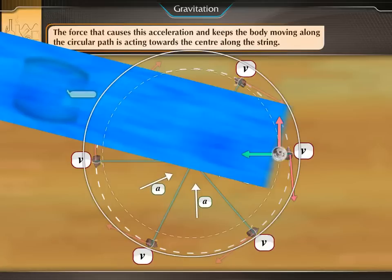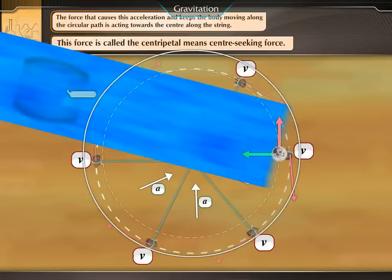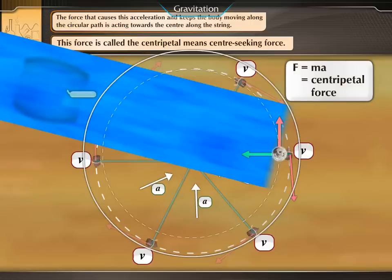The force that causes this acceleration and keeps the body moving along the circular path is acting towards the center along the string. This force is called the centripetal, means center-seeking, force.